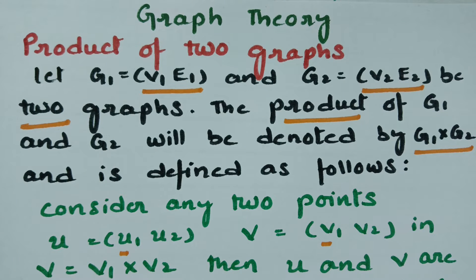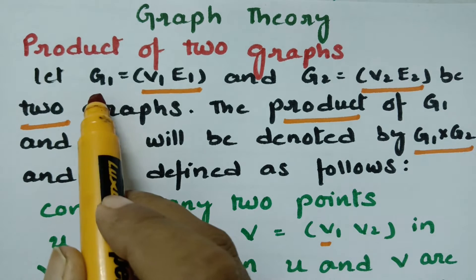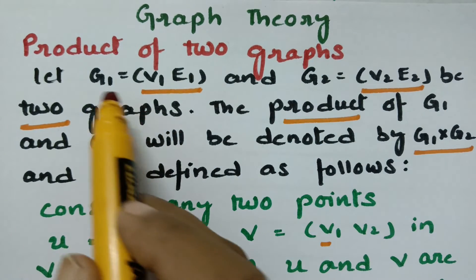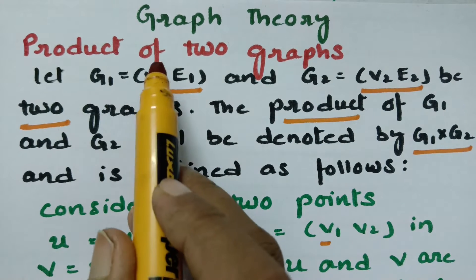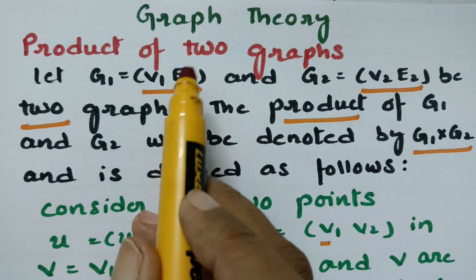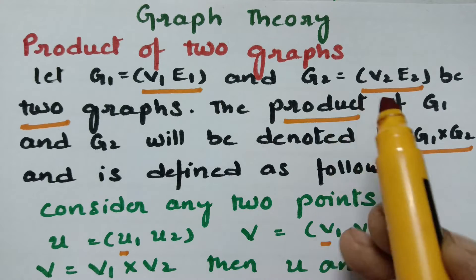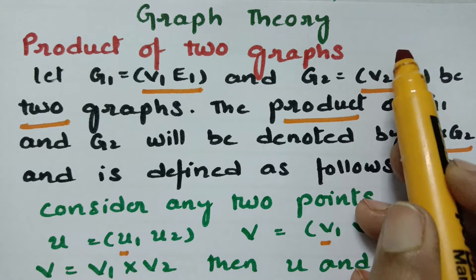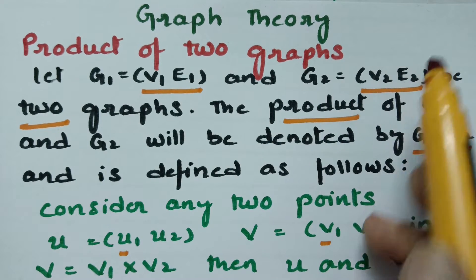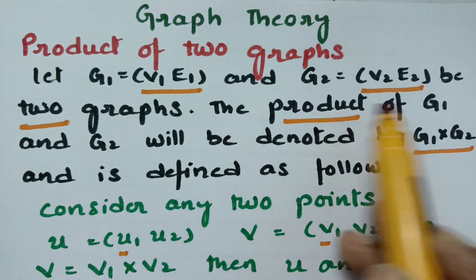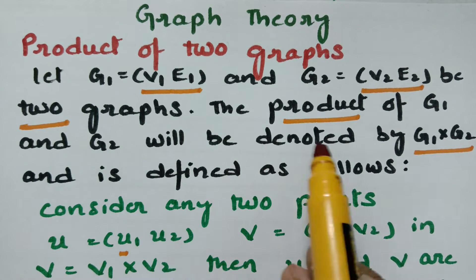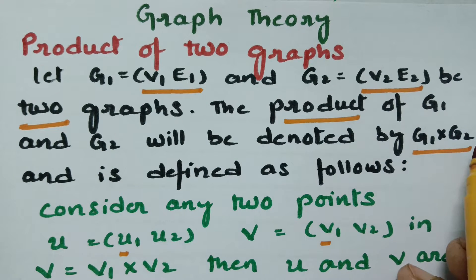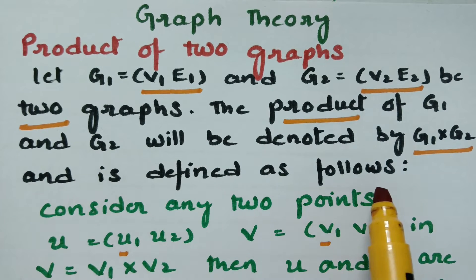Let us consider two graphs G1 and G2. G1 contains the vertex set V1 and edge set E1, whereas G2 contains the vertex set V2 and edge set E2. The product of G1 and G2 is denoted by G1 cross G2 and is defined as follows.